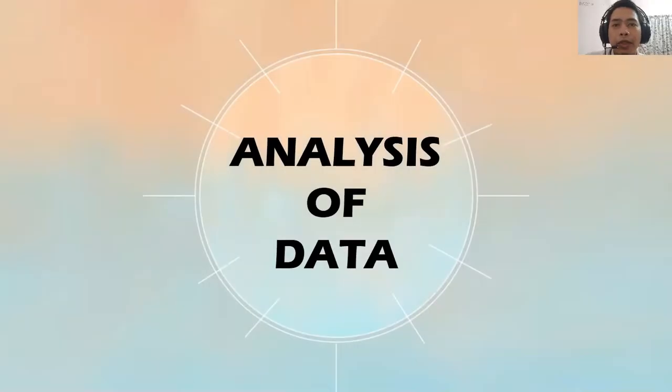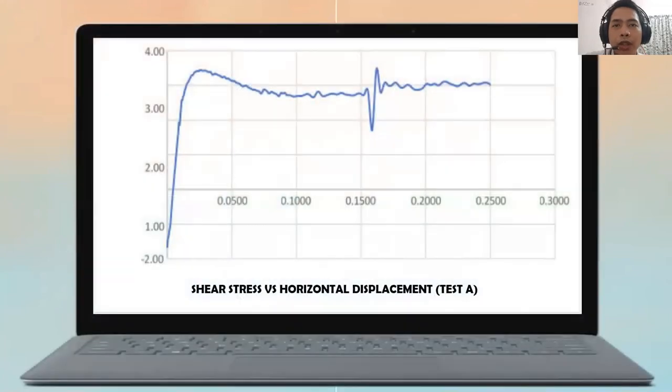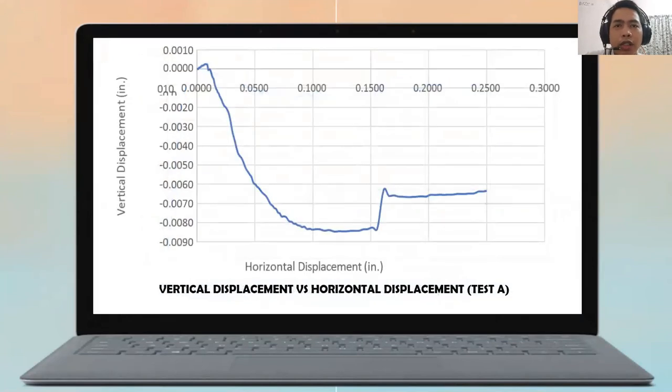Next we move to the analysis of data. This one as you can see the graph which is shear strength with horizontal displacement for test A graph. From the graph you can see that the sand is quite dense. We move to the next graph which is vertical displacement with horizontal displacement for test A.